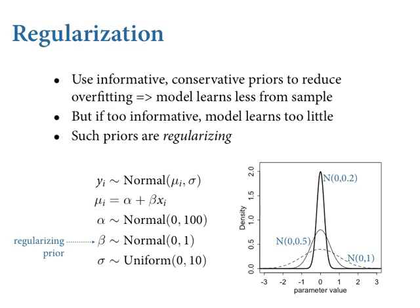So back to regularization. A regularizing prior is conventionally a conservative prior. It's informative — it's meant to pin down the model, make it calm down and not be too excited by the sample. You can think of it as expressing skepticism in large values of regression coefficients. These will reduce the amount of learning from the sample. But if you have a lot of data, these priors will have no effect. When the likelihood is very, very peaked — which is what happens when you have a lot of evidence — even a very strong prior will get swamped out. Inside a Bayesian model, priors are just the result of previous learning.